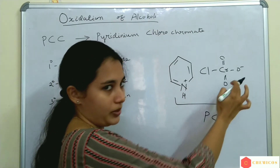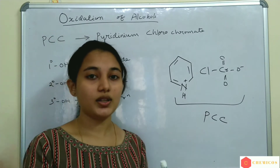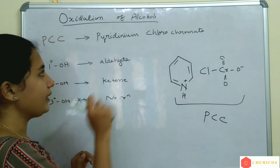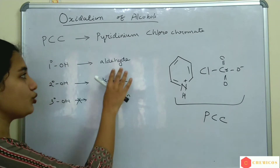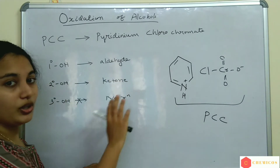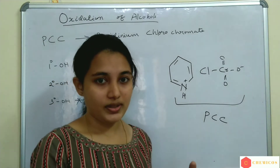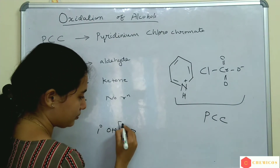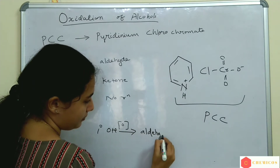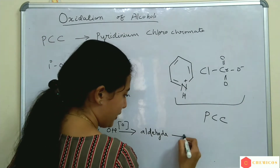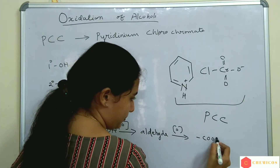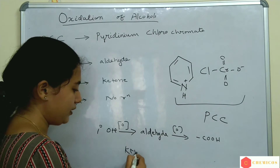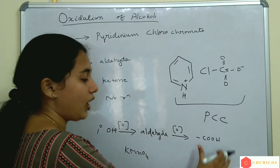Why do we use PCC over other oxidizing agents? The advantage of PCC over other oxidizing agents is it can oxidize a primary alcohol to an aldehyde and a secondary alcohol to a ketone. When we use other strong oxidizing agents, a primary alcohol is first oxidized to an aldehyde, then further oxidation takes place to a carboxylic acid.